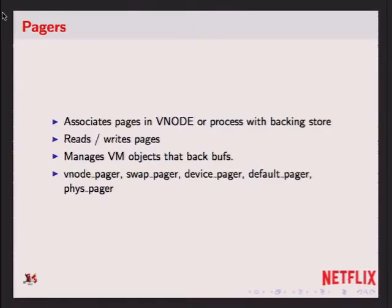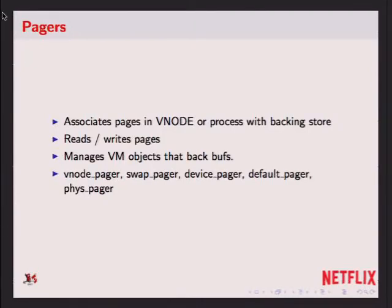Another part of the buffer cache are pagers. When I say the buffer cache goes to the next layer, the next layer typically is one of these pagers, where the data is written out and brought in. The vnode pager is what handles writing and reading pages associated with vnodes — it brings fault pages in or writes them out when doing I/O to files primarily. The swap pager is used for managing working sets. The default pager does nothing, and the other pagers are not used all that much.